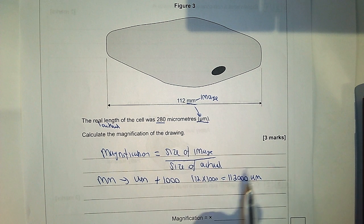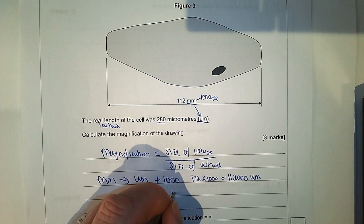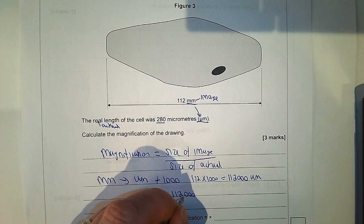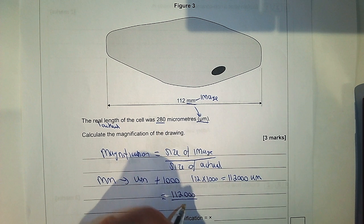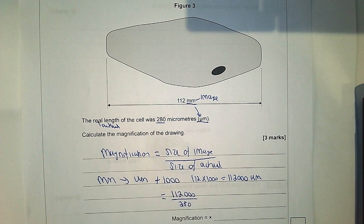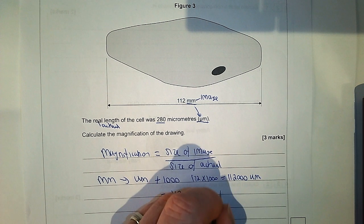We then just need to put our numbers into this equation. We've got size of image is 112,000 divided by size of actual which is given here, that's 280. So we put those numbers into our calculator to do the calculation and that gives us an answer of 400.